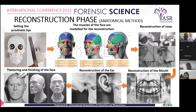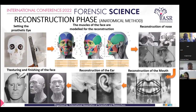Next we come to the muscles and their development. We start with the muscles of the neck first: the sternocleidomastoid, trapezius, and platysma. Then we come to the face: temporalis, masseter, buccinator, mentalis, depressor labii inferioris, and orbicularis oris.